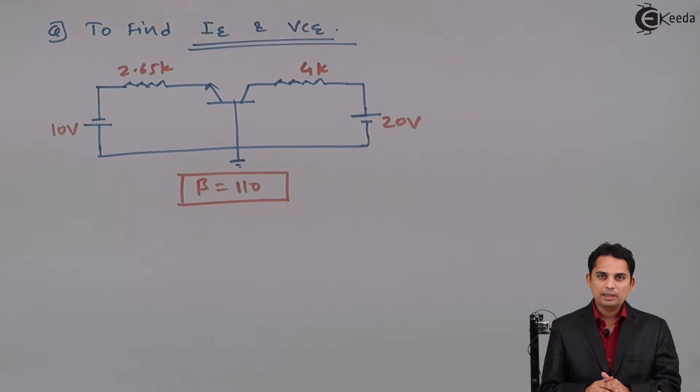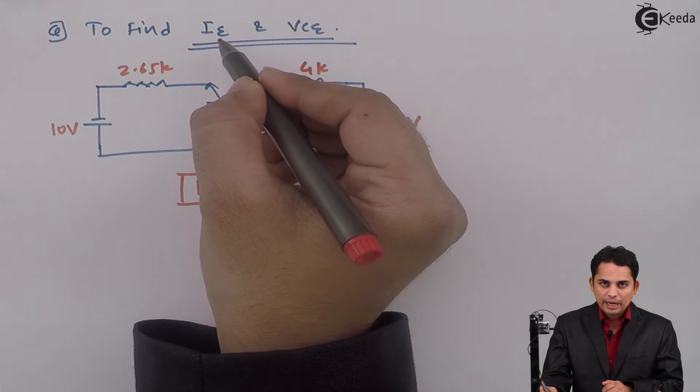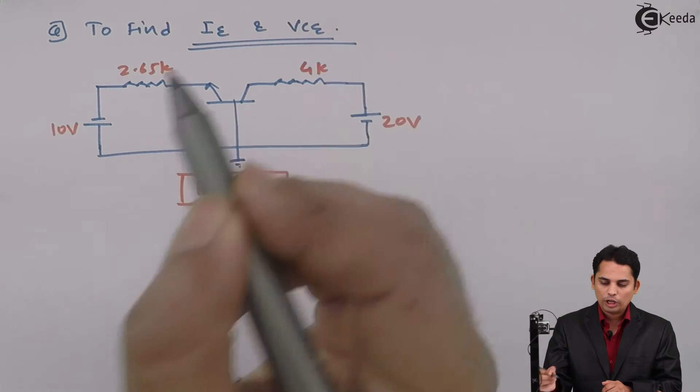Hello students, in the exam they have given you a problem based upon common base configuration in which they have asked you to find out emitter current IE and voltage between collector to emitter VCE.